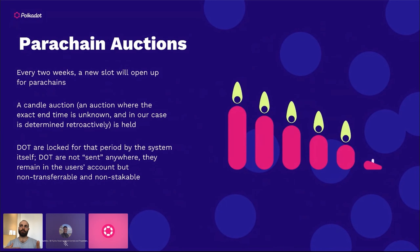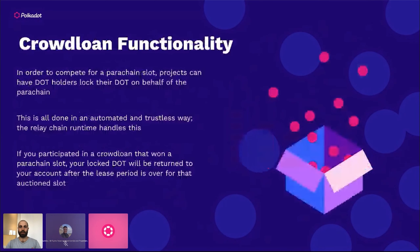The winning parachain doesn't know which block it will win in, which creates an incentive for parachains to bid as soon as possible, as much as possible, and as often as possible — creating a fairer auction mechanism. Auctions require DOT to be locked up by parachain teams. Those DOTs are not sent anywhere but remain in the account of the parachain teams, though they become non-transferable and non-stakeable. Parachain teams can increase their chances by running crowd loans.